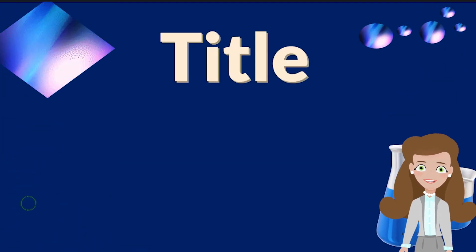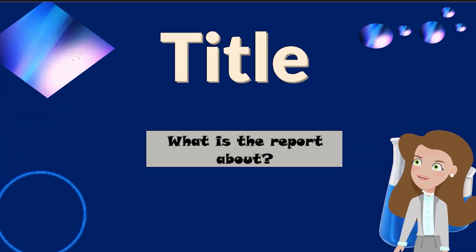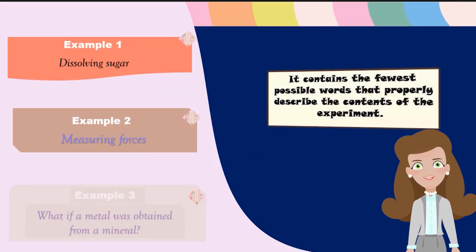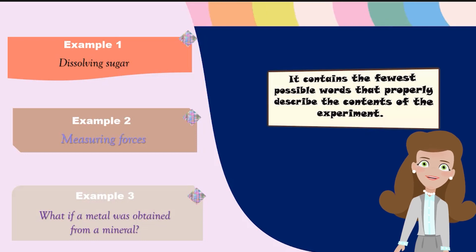The first one is your title, which is what is the report about? The title contains the fewest possible words that properly describe the contents of the experiment. For example, dissolving sugar, measuring forces, or what if a metal was obtained from a mineral?